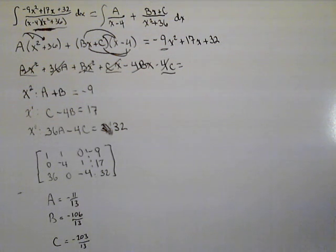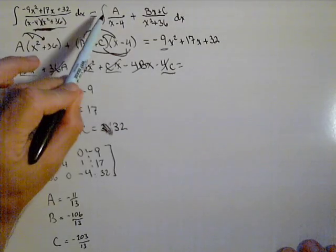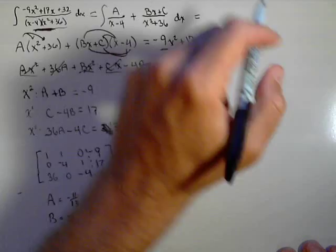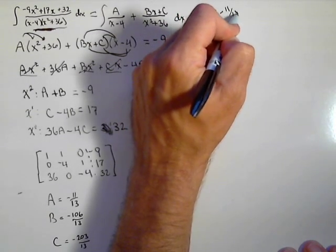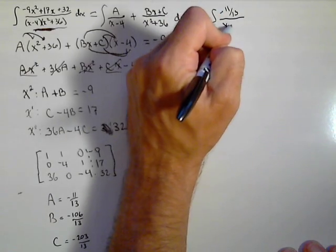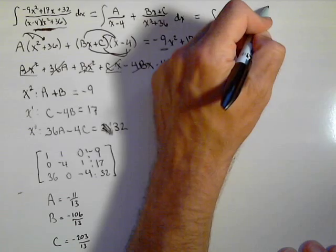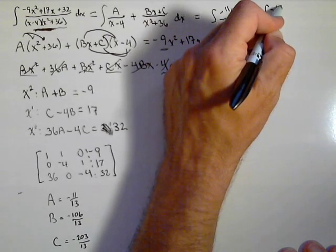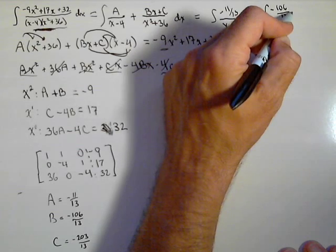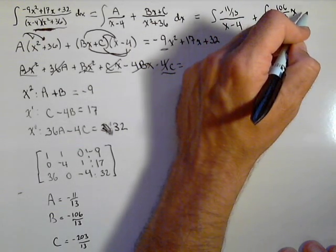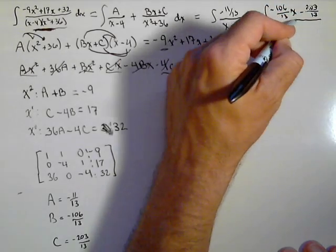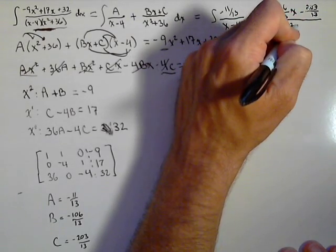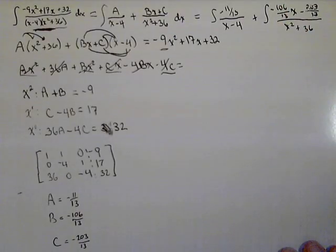So these are the constants that are gonna make this problem work. Now let's see if we can fit the rest of this problem off to the side. Now we have A and B. So we know that we are trying to solve the integral of negative 11 over 13 over x minus 4 plus negative 106 over 13x minus 203 over 13 all over x squared plus 36. So there's the messy integral we're trying to solve.